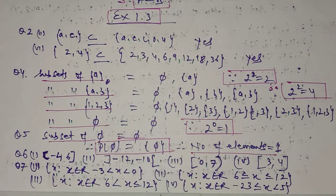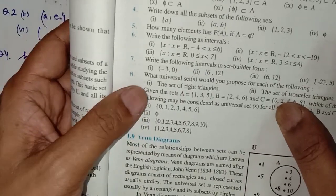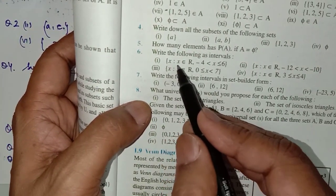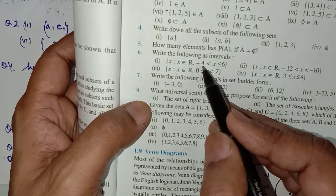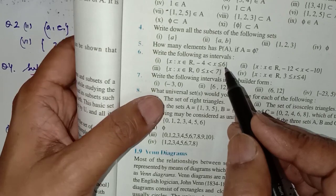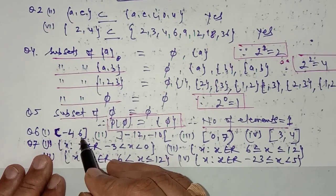In question number 6, you have to convert intervals from roster form to set builder form and from set builder form to roster form. The set builder form is: x such that x belongs to real numbers and x is greater than minus 4 and less than or equal to 6. This means for minus 4 we use an open interval, and for 6 we use a closed interval: (-4, 6].